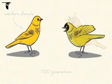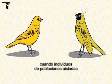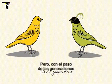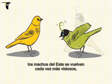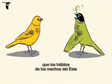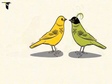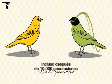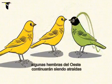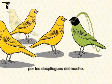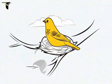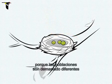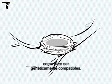Just as before, early in the speciation process when individuals from isolated populations meet, eastern and western birds readily mate. But as generations pass and the eastern males become fancier, the western females begin to find the eastern males' habits foreign and surprising. But these traits are clearly not deal-breakers. Even after 10,000 generations of geographic isolation, some of the western females continue to find the males' displays attractive. At this stage, the eggs she lays aren't viable because the separated populations have evolved too many genetic differences to be compatible.